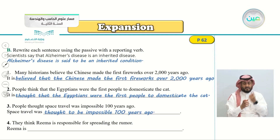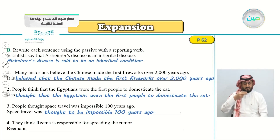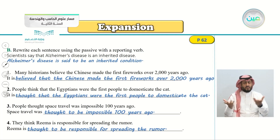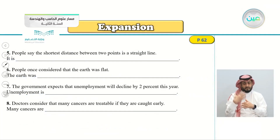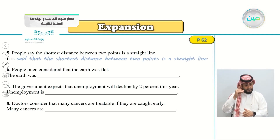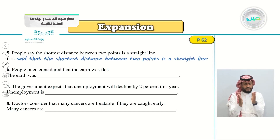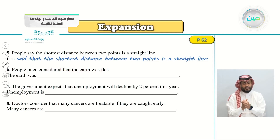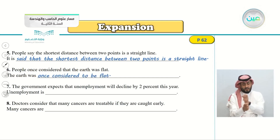Number four: 'They think Rima is responsible for spreading the rumor.' The answer is: 'Rima is thought to be responsible for spreading the rumor.' Number five: 'People say the shortest distance between two points is a straight line.' The answer is: 'It is said that the shortest distance between two points is a straight line.' Number six: 'People once considered that the earth was flat.' The answer is: 'The earth was once considered to be flat.'